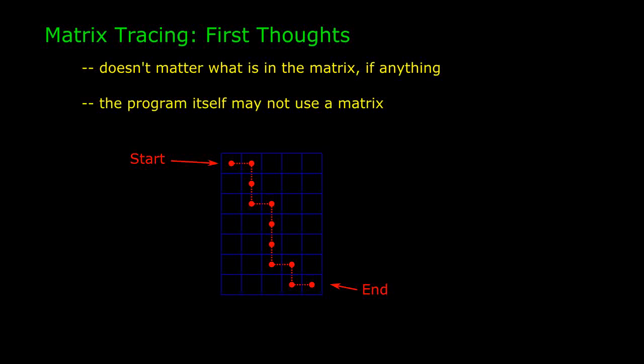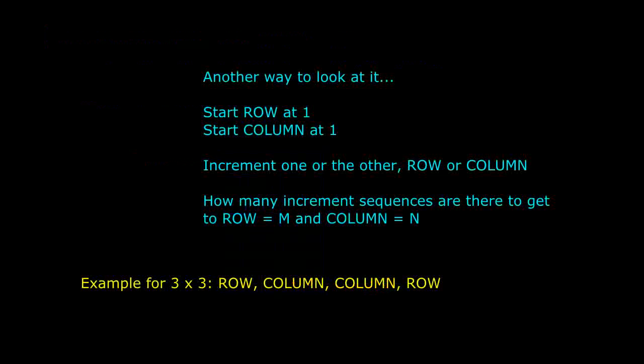So, the first thing to realize is that the fact that the matrix spells out a particular word isn't necessarily relevant to the solution. That's the kind of red herring that's often thrown into these programming problems. All you need to worry about is how many ways there are of getting from one corner of a matrix to the other, just moving to the right or down. That means there isn't necessarily a matrix involved in the solution of the problem. In other words, we might imagine two variables, row and column, that keep track of where we are in a particular matrix. And the question is, if we always have a choice of incrementing one or the other, how many sequences of increments are there that result in getting to that particular place?